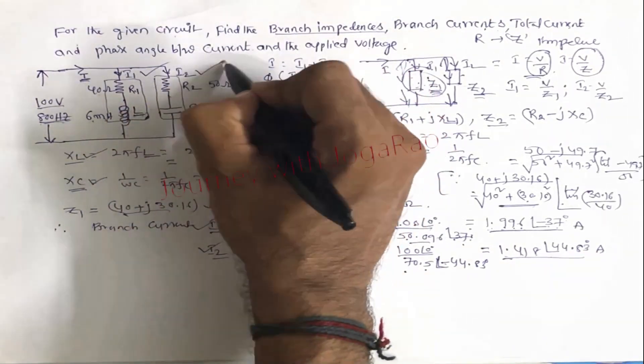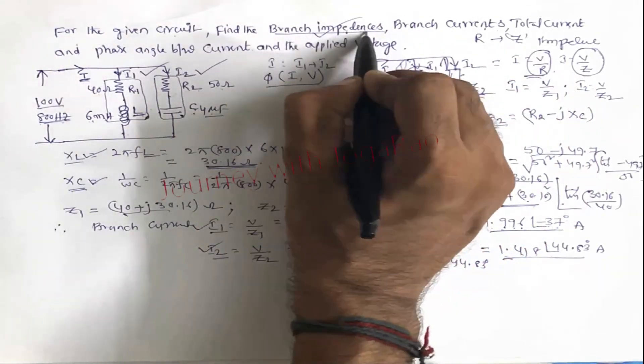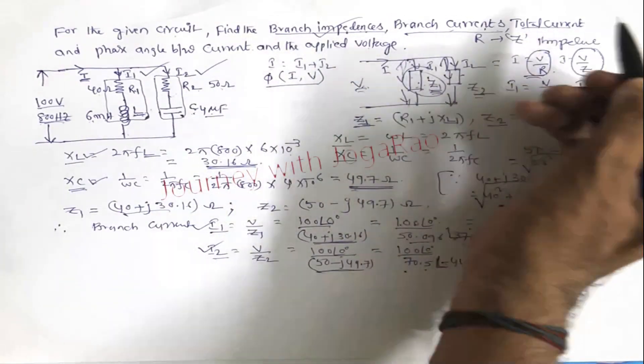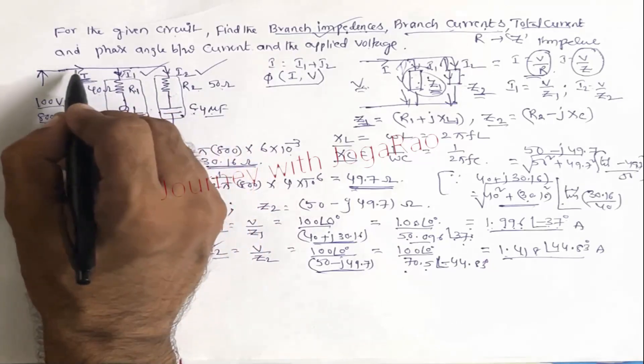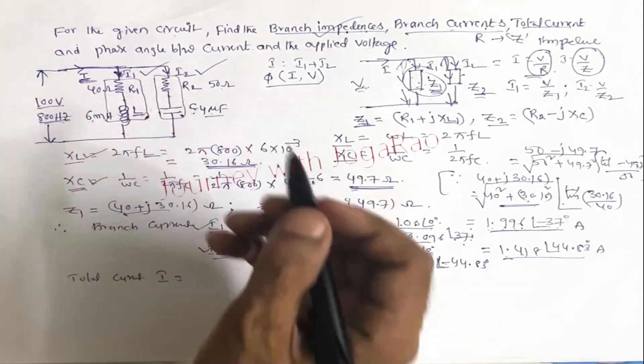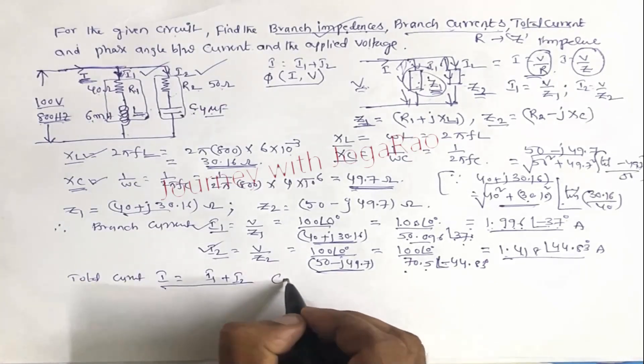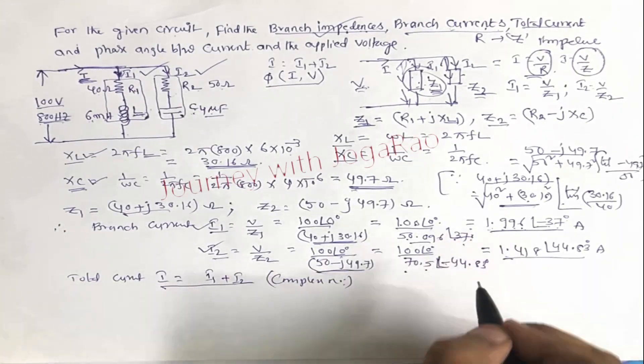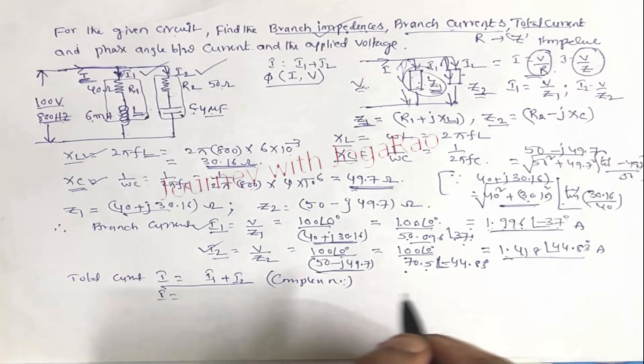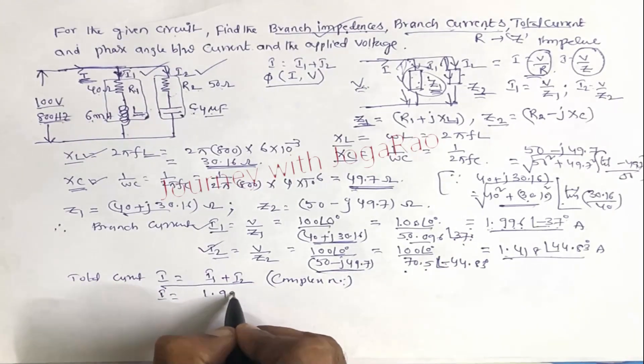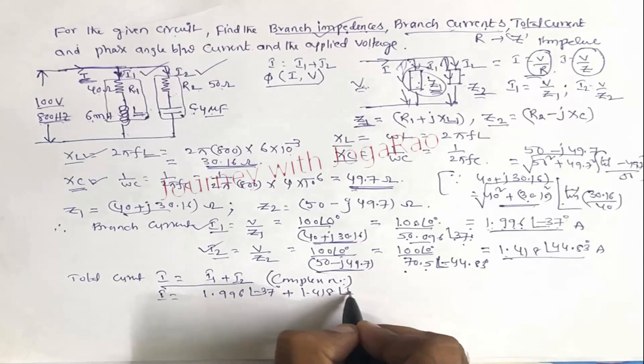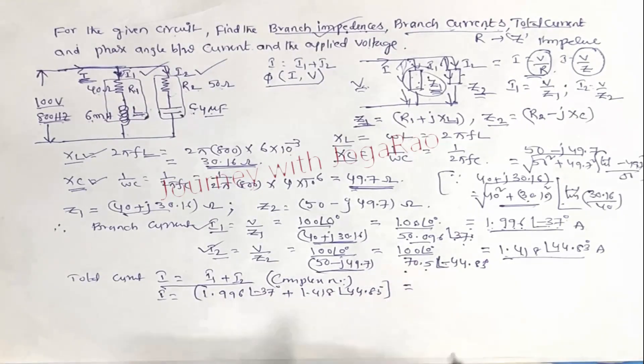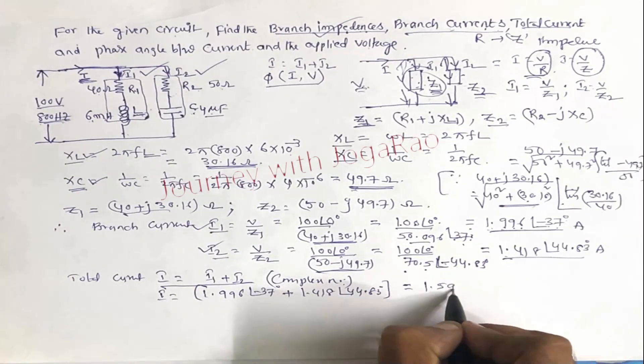So i1 is 1.996 amperes, i2 is 1.418 amperes. So branch currents i1, i2 are over, branch impedances z1, z2 are over. Next, total current. Total current I is equal i1 plus i2. To add i1 and i2, complex numbers need to be added. So i1 is equal 1.996 at an angle minus 37 degrees plus 1.418 at an angle 44.83 degrees.